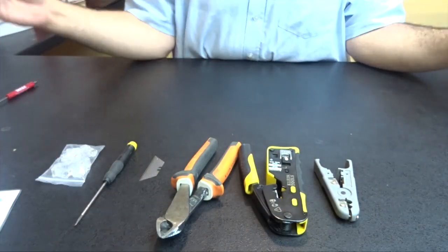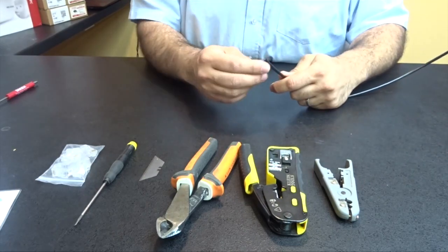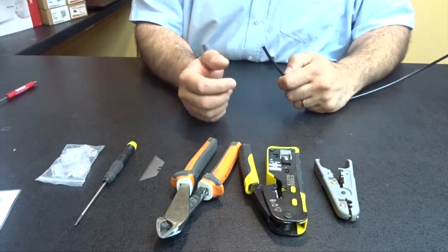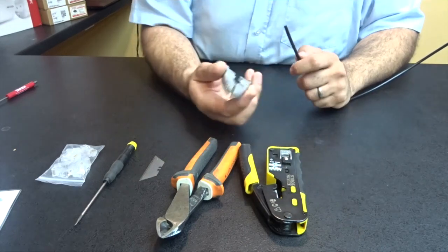So we've got a length of Cat5 and this is external grade, so it's external duct grade Cat5. We've got our tools in front of us and we start.